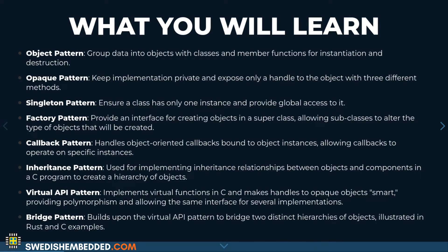Then we're going to look at the singleton pattern, which enforces a single instance of a particular object. Like many of these patterns, it enforces a certain expectation — when you apply the pattern, you're clear about intent, and the pattern will prevent anyone from going against it. The factory pattern is used to create objects based on a parametric description; a device tree is a good example. We use the factory pattern to create objects in one place so we don't need complicated creation procedures scattered throughout our code.